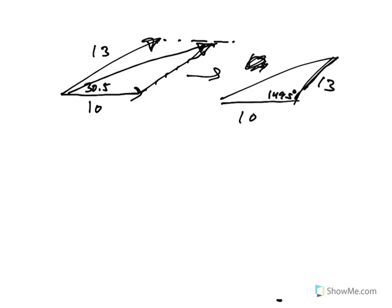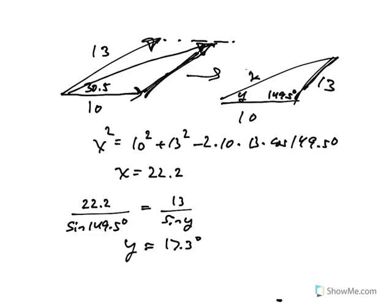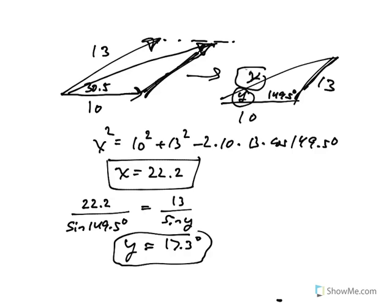And through a combination of the law of cosines to get the magnitude of the resultant is 22.2. And once you have that, you can use the law of sines to get the angle between the resultant and the 10-pound force to be 17.3 degrees.